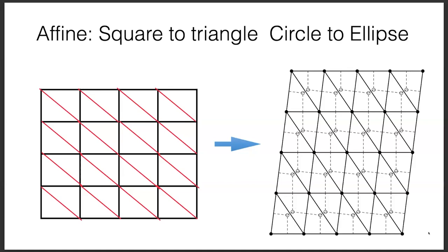A simplex is the unique rigid object totally defined by its edge lengths. In two dimensions it's a triangle; in three dimensions it's a tetrahedron with six edge lengths; and so on. You can encode geometry uniquely in lengths as long as you use simplices. A zero-simplex is a point, a one-simplex is a line, a two-simplex is a triangle, a three-simplex is a tetrahedron.